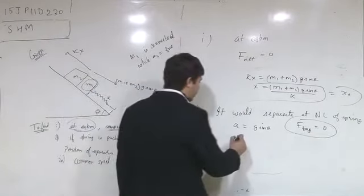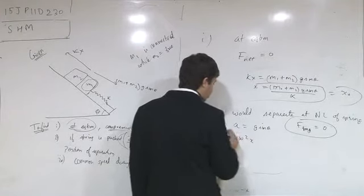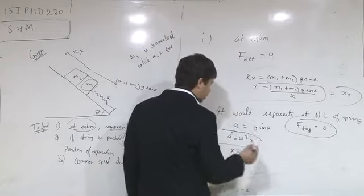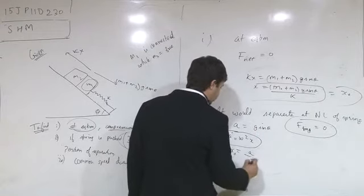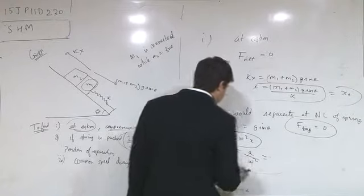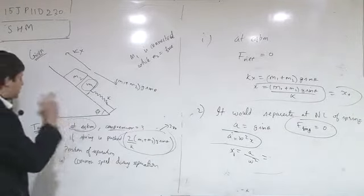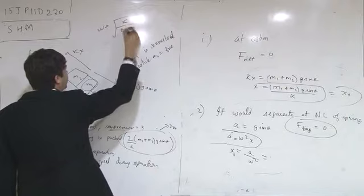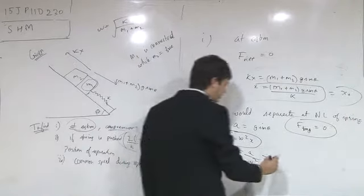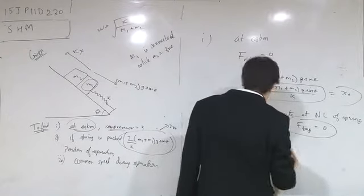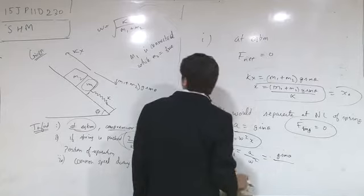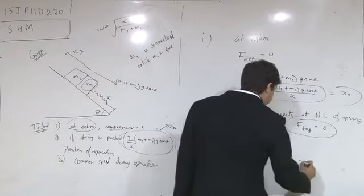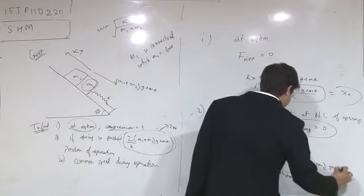Now knowing the acceleration, we can say that in SHM, acceleration is equal to ω²x. So the position at which separation takes place is x = a/ω², where ω = √(k/(m1 + m2)). Substituting, the separation position comes out to be (m1 + m2)g sinθ divided by k.